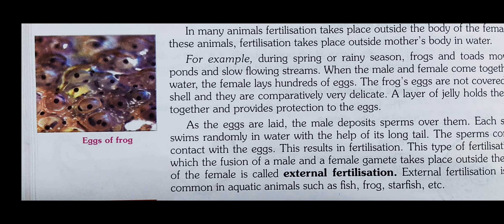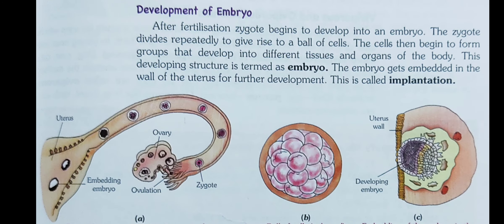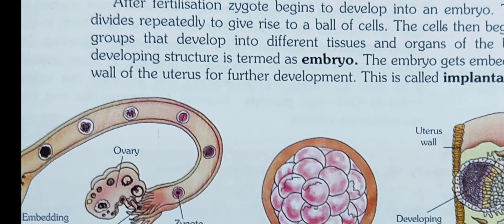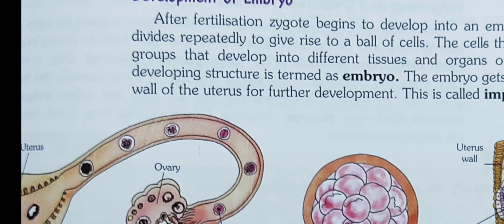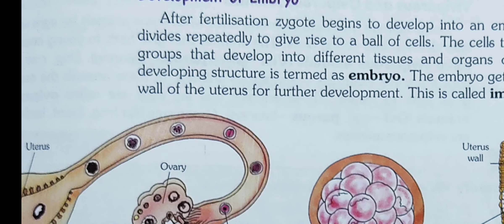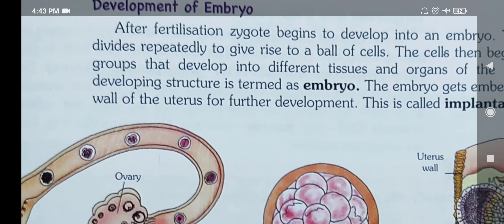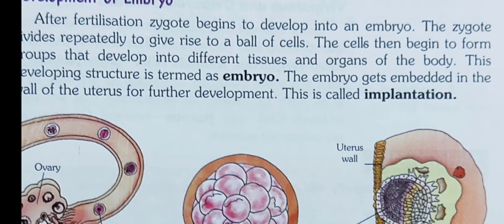Next, we will study about the development of the embryo. After fertilization, the zygote begins to develop into an embryo. The zygote divides rapidly to give rise to a ball of cells. The cells then begin to form groups that develop into different tissues and organs of the body. This developing structure is termed an embryo. The embryo gets embedded in the wall of the uterus for further development. This is called implantation.